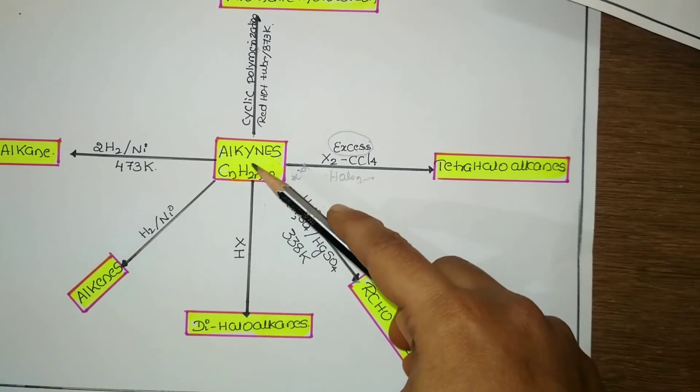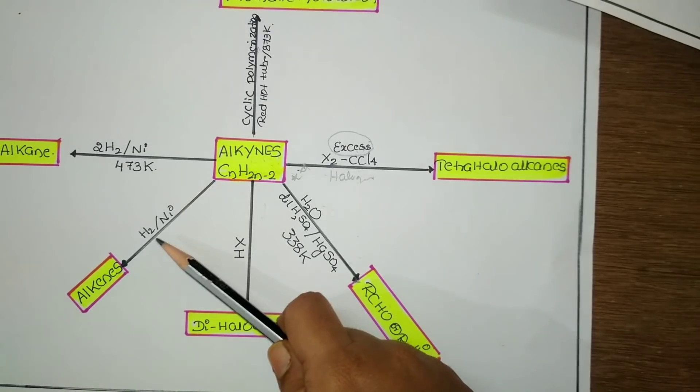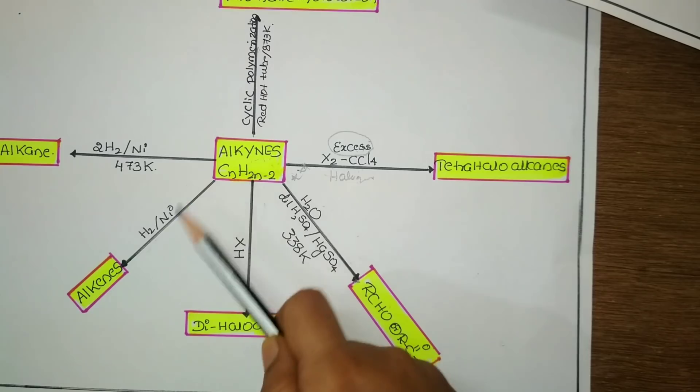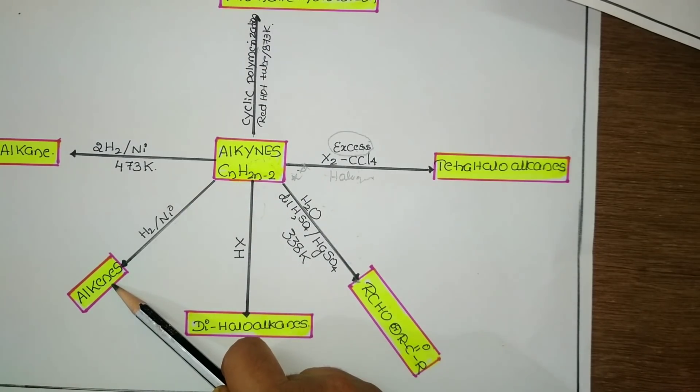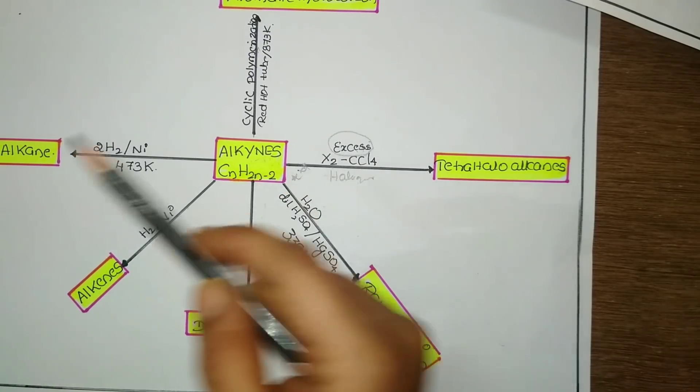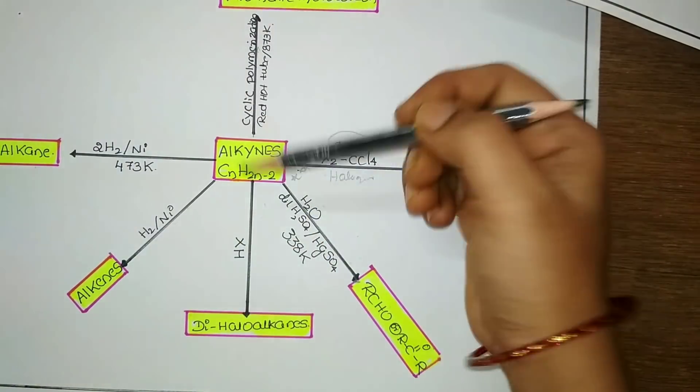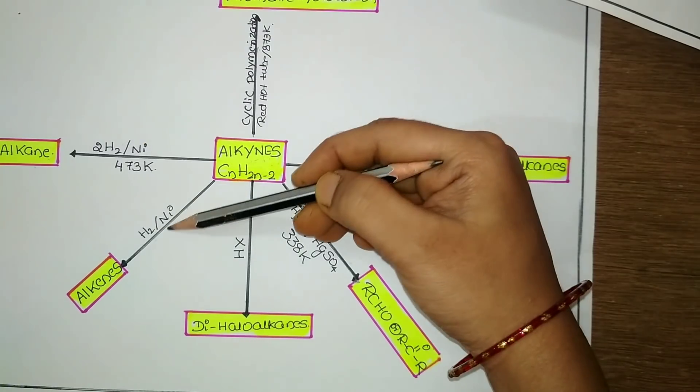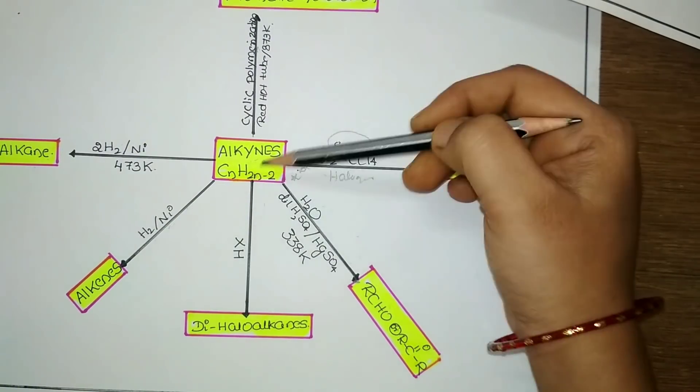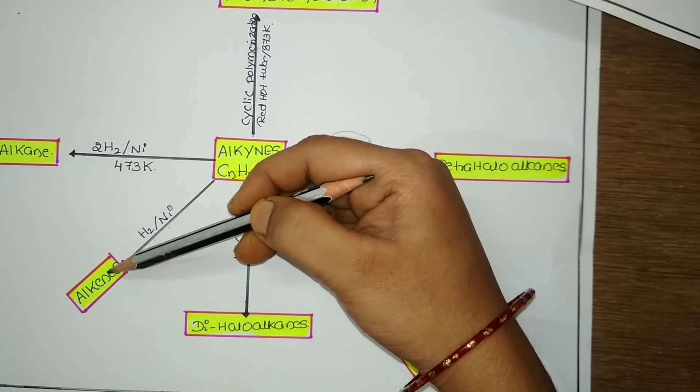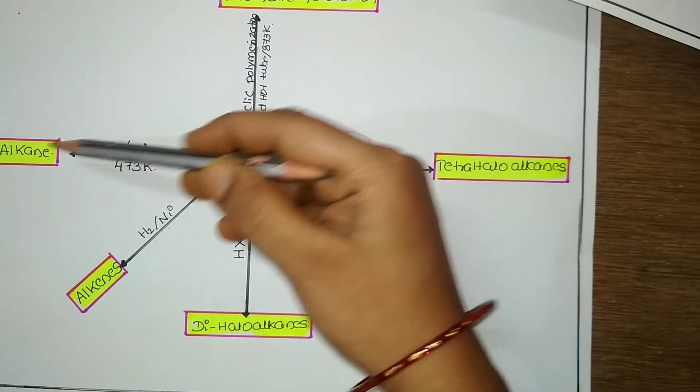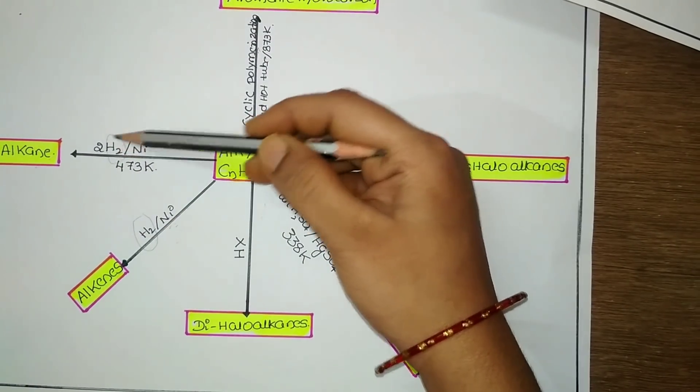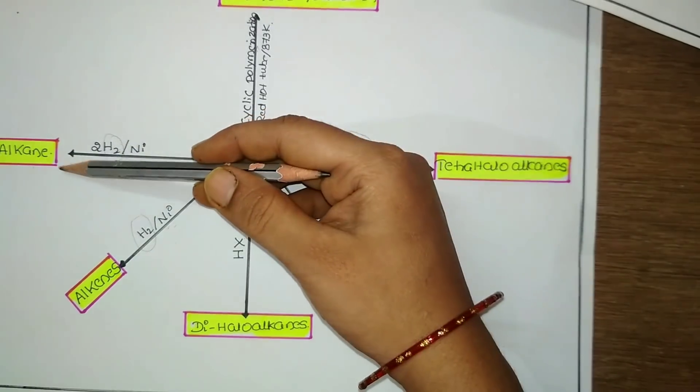Next, alkynes when treated with hydrogen over nickel, that is hydrogenation of alkynes in presence of nickel, gives alkanes. Alkynes can be directly converted into alkane when excess hydrogen is added. When limited hydrogen is added, alkynes are converted into double bonded alkenes. When excess hydrogen is added, it converts into alkane. Both methods depend on how much hydrogen is added, which decides whether alkenes or alkanes will be formed.